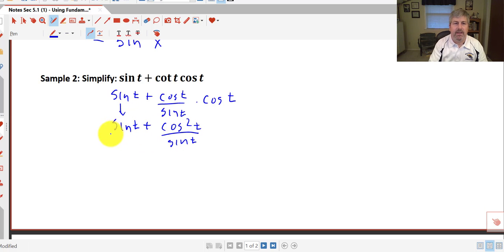So that's going to be cosine squared t over sine of t. Just bring my sine of t down. Now, if I'd like to add these, I just need a common denominator. So I'll get my common denominator. I'll multiply this by sine t over sine t. And now,